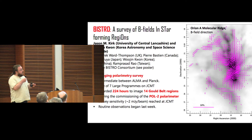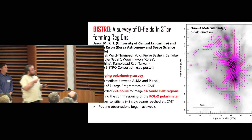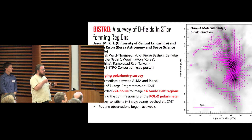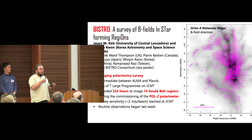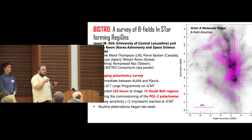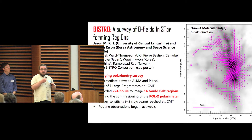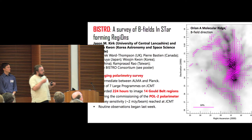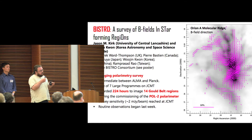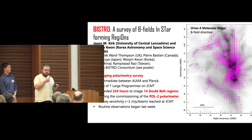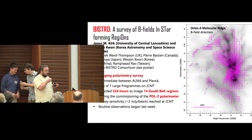My name is Jason Kirk, representing the BISTRO Consortium with Woojin Kwon. This is a new imaging polarimetric survey of nearby star formation regions. We're following the work of the JCMT Gould Belt survey, targeting regions with good dust continuum and molecular line measurements, so we can use the combined data set and the CF technique to estimate not just polarization direction and magnetic field direction, but also magnetic field strength within these regions. We're driving the commissioning of the POL-2 polarimeter, the follow-up instrument to the old SCUPOL polarimeter at the JCMT.